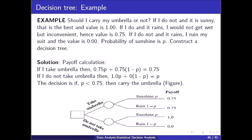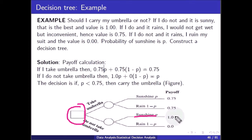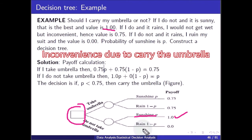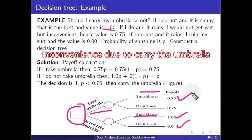Looking at the decision tree: the two alternatives are to take the umbrella or not. If you do not take the umbrella and it is sunny, the value is 1. If you do not take the umbrella and it rains, the value is 0. If you take the umbrella and it is sunny, the convenience value is 0.75. If you take the umbrella and it rains, the value is also 0.75.